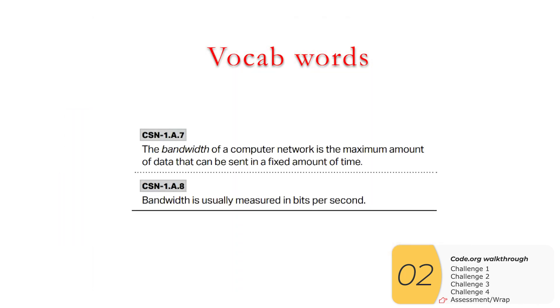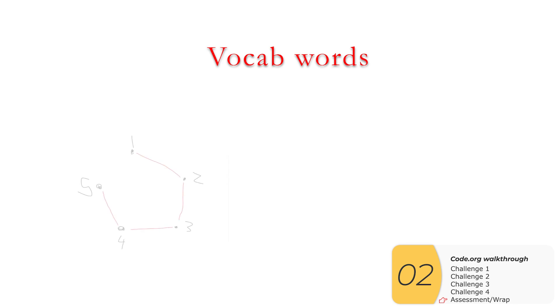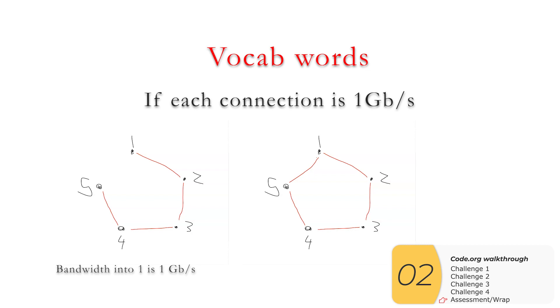The last vocab word Code.org is going to put into this lesson is bandwidth, which is the maximum amount of data that can be sent in a fixed amount of time, usually in bits per second. So here's a real life example of this. If I take my answer from challenge two, and I assume each connection carries one gigabit per second, the bandwidth into one, computing device one, is one gigabit per second. And if I take my answer from challenge three, because there are two connections into computer device one, the bandwidth into one, computing device one, is two gigabits per second. So that's a real example of bandwidth.